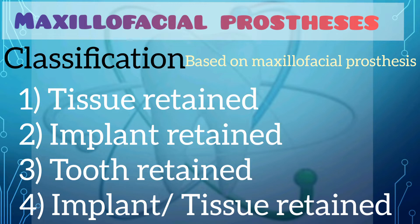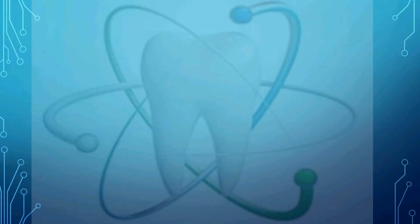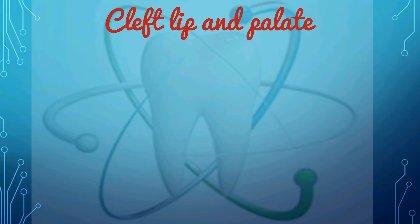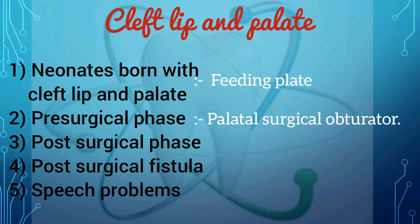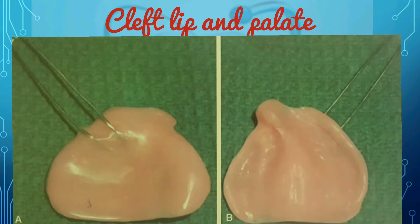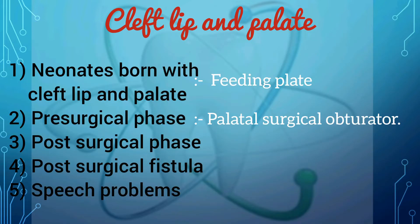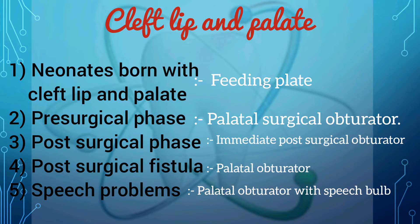To make this video easy and understandable, I will be dividing each defect and its prosthesis separately. The most common congenital defect is the cleft lip and palate. We will briefly go through the types of obturators used in each phase of treatment for cleft lip and palate. Initially, a feeding plate is fabricated by the prosthodontist for neonates born with cleft lip and palate.